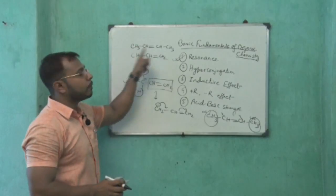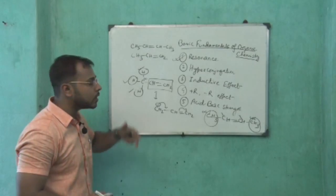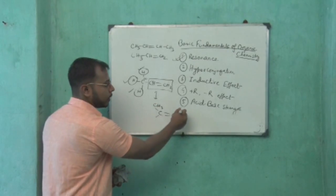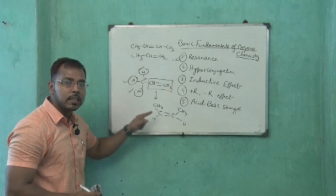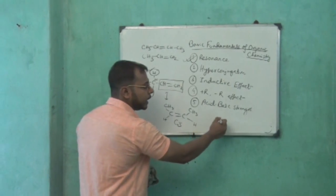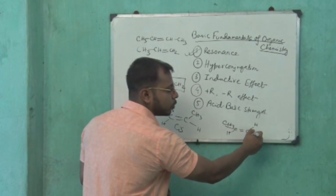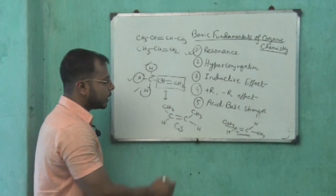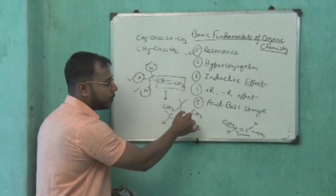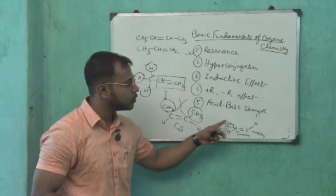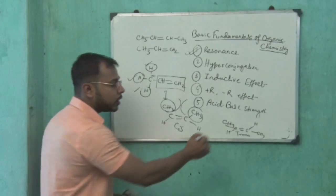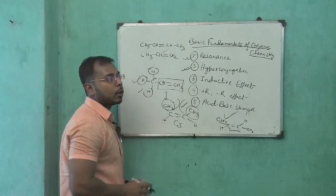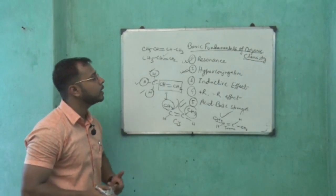The compound 2-butene may be cis or trans. Cis and trans means: if we put the same groups on the same side, it is cis-2-butene; if we put the same groups on opposite sides diagonally, it is trans-2-butene. In cis compounds, there is steric repulsion between the two methyl groups, but in trans compounds there is no steric repulsion. So the stability order will be: trans-2-butene > cis-2-butene > propene. This is the basic fundamentals of hyperconjugation for the stability of alkenes.